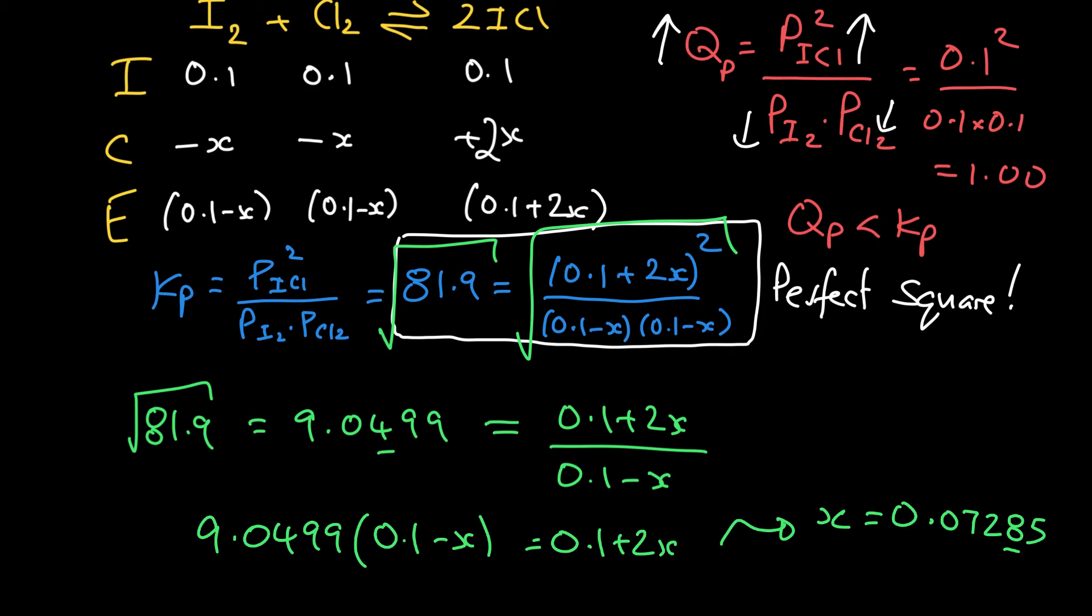Now, what do we want? We want the equilibrium pressures of everything, so the pressure of iodine and the pressure of chlorine. Those were just 0.1 minus X. And now I know the value of X. I can just subtract 0.07285 away from 0.1. That gives me 0.0272 atmospheres. And so that's at equilibrium.